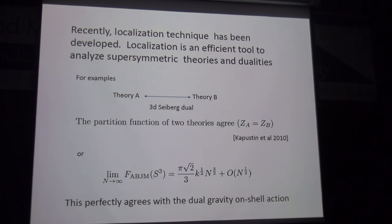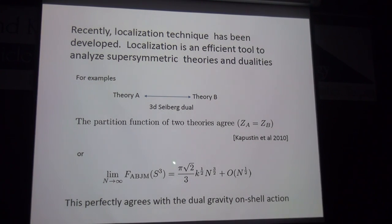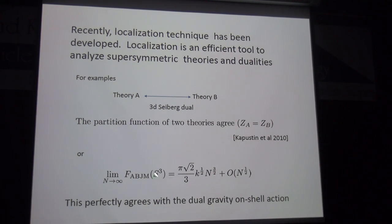By using localization we can extract the large-N behavior of the free energy of the ABJ model. This free energy has a specific form that perfectly agrees with the dual gravity on-shell action, consistent with the AdS/CFT dictionary requirement that the free energy should agree with the dual gravity on-shell action.